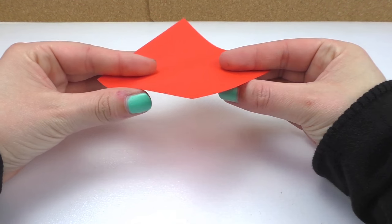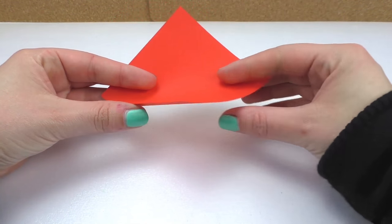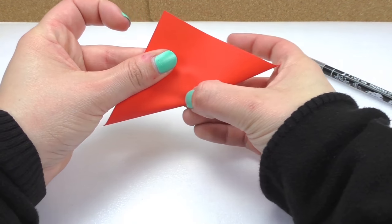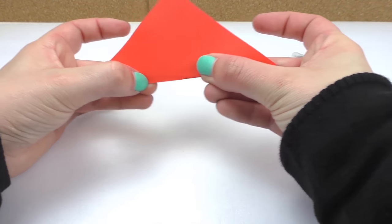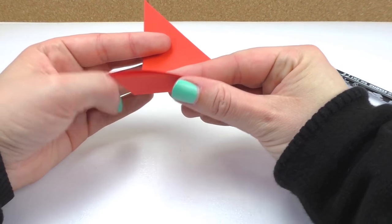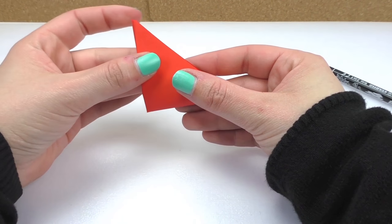We're going to start by folding our paper in half from corner to corner and let's press it really hard so we have the folding. And then we're going to do the same thing one more time, fold it in half from corner to corner.